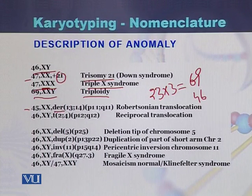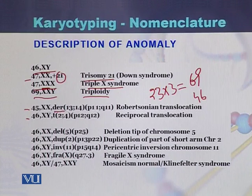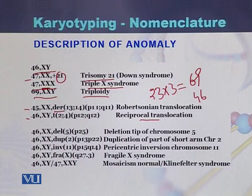In the next case, written as 46,XYt, the total number of chromosomes is 46 and XY are the sex chromosomes. In addition, there is a reciprocal translocation between chromosome 2 and chromosome 4.